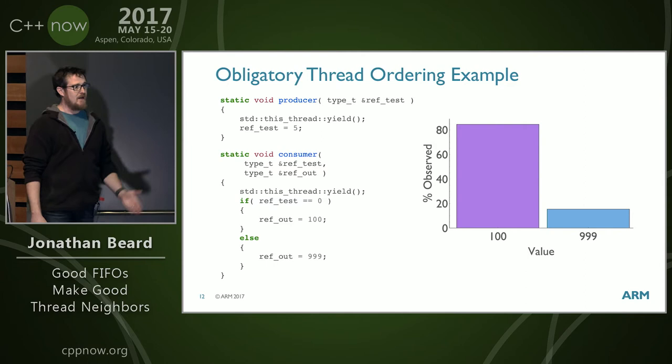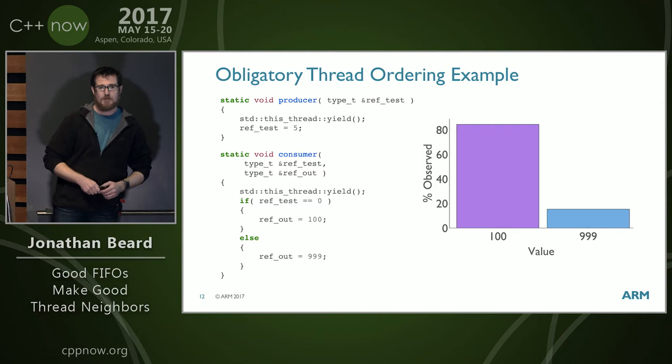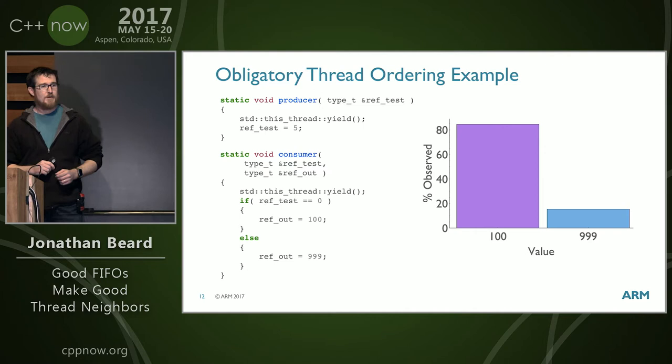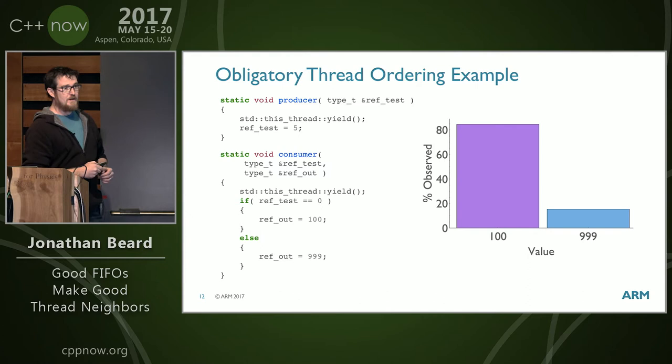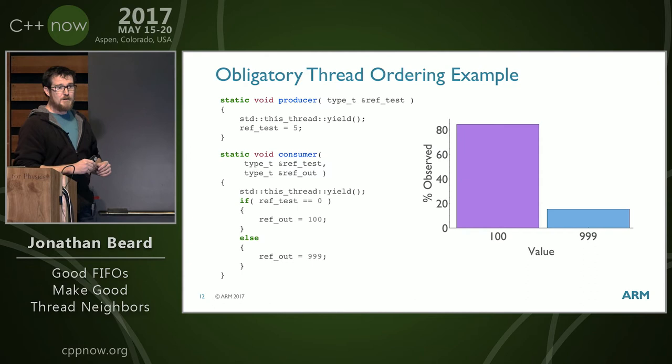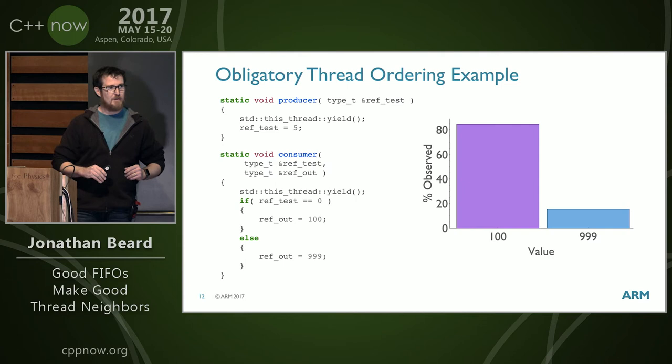At the core of this talk it's about thread synchronization and FIFOs in general. I have the obligatory thread ordering example: producer and consumer are two functions running on two separate threads. I want to send a message — ref test — from my producer to my consumer. Most people in this room can see what's wrong with this immediately. What would we expect the answer to be? We need some audience participation.